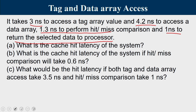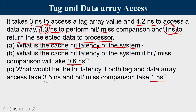The tag array and data array are accessed in parallel but may have different access times. After tag access, hit/miss comparison is performed. There are two branches: left (tag array access + hit/miss comparison) and right (data array access). The more dominant branch determines when data return can start. There are three sub-questions to evaluate.